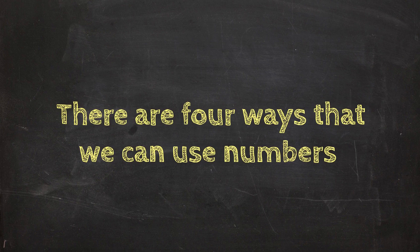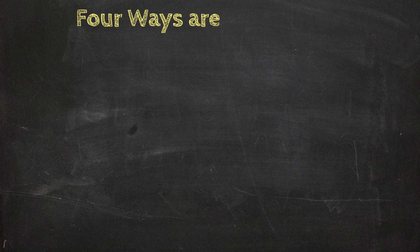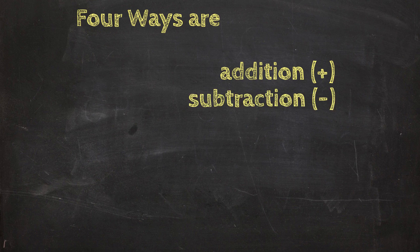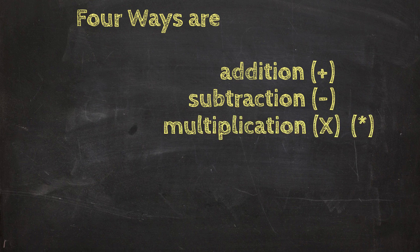There are four ways that we can use numbers in English, and the four ways are addition and there's a symbol for addition, subtraction, the symbol for subtraction, and multiplication.